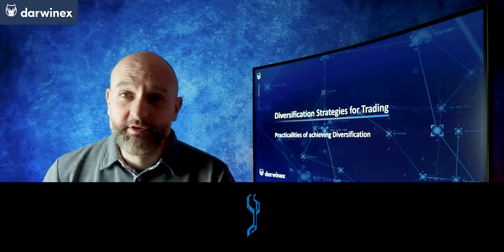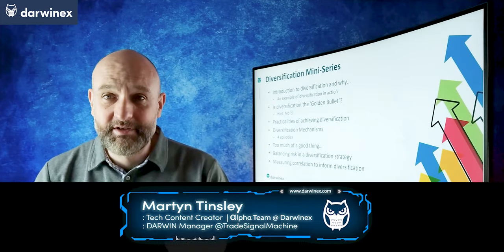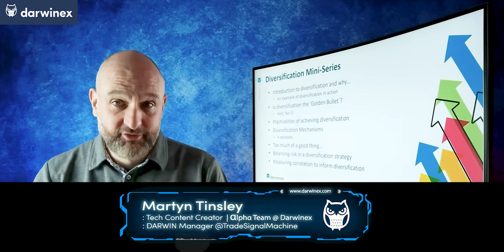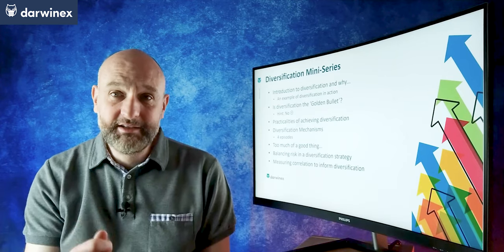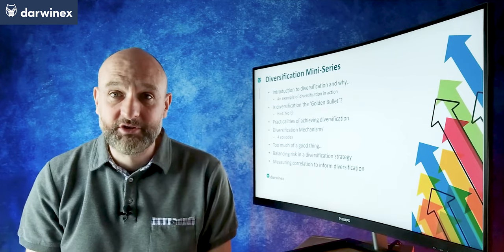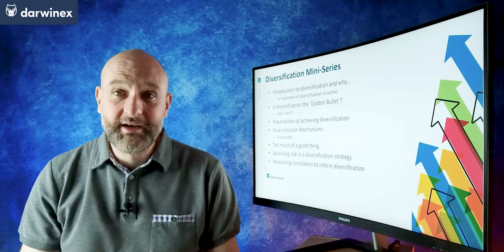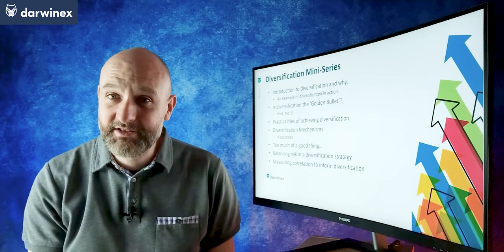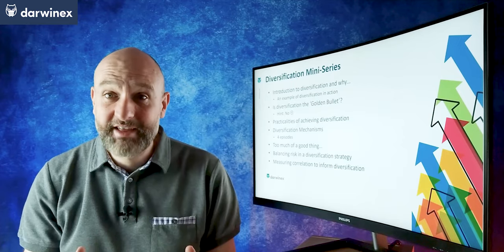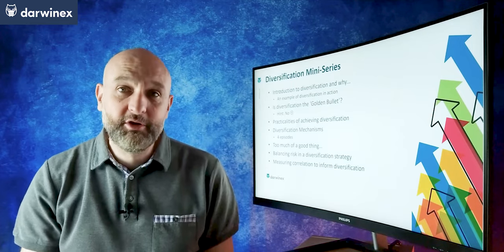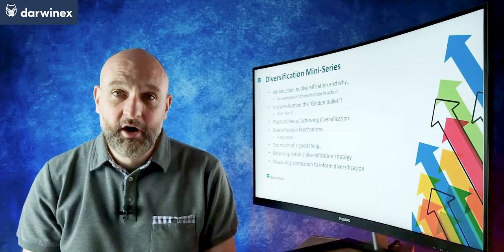This is the third episode in the mini-series on diversification. In the first two episodes, we looked at an introduction to the subject and also a specific example that illustrated the power of diversification if done properly. Then last time, we considered the question of whether diversification is the golden bullet or the answer to all of your risk management issues. And of course, the answer to that was no, but the conclusion we came to was that it is still a critical component of risk management.